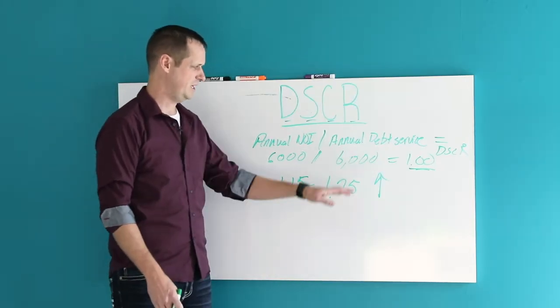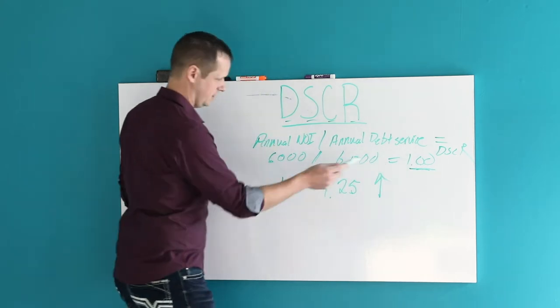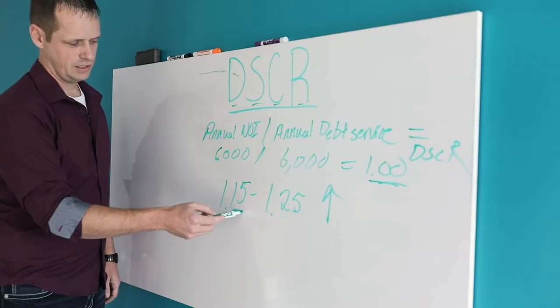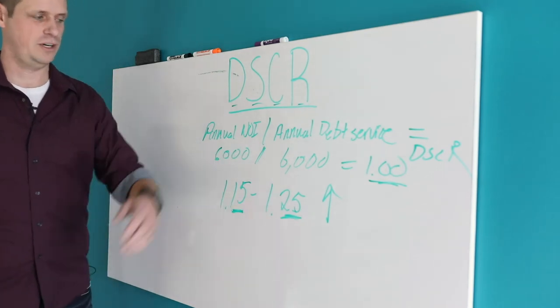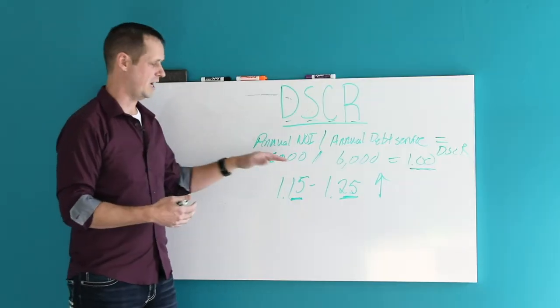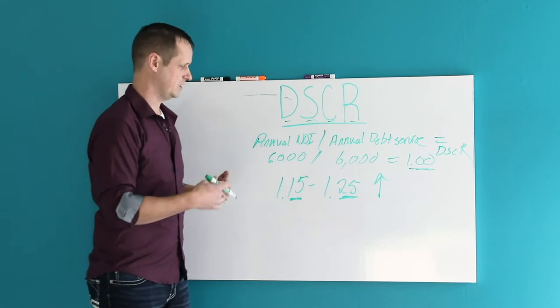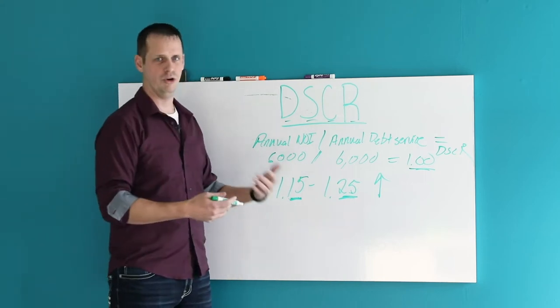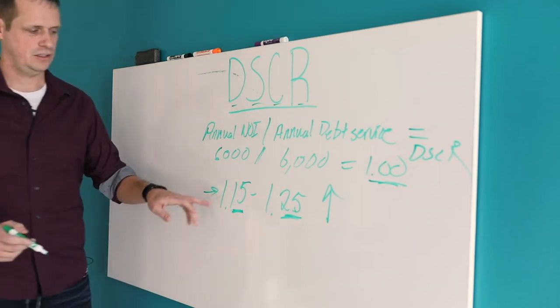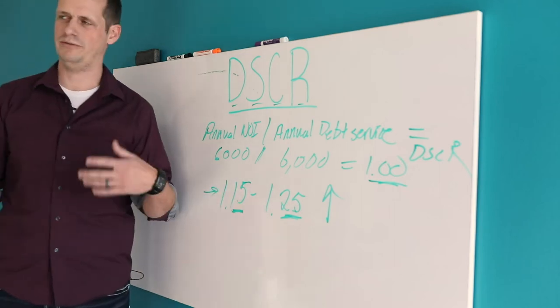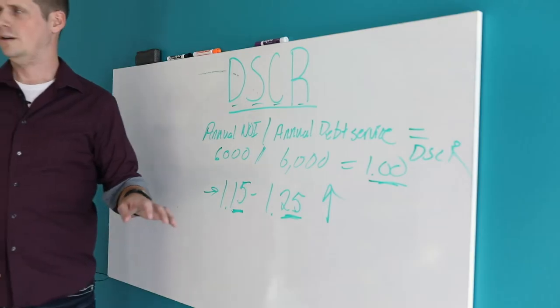So what this means is for every dollar of debt that comes in, you've got 15 cents or 25 cents or whatever that number is that you've made on top of the debt. So you now have some flexibility in the income that's coming in. Banks are going to want to see numbers like this.